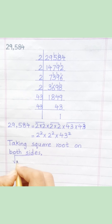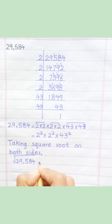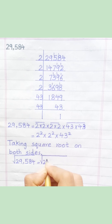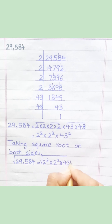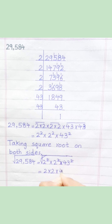Square root of 29,584 equals square root of 2 square multiply 2 square multiply 43 square, equal 2 multiply 2 multiply 43, equal 172.